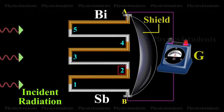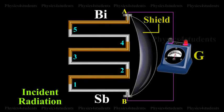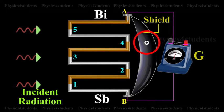The other set of junctions, 2, 4, called cold junction, is shielded from the radiation.